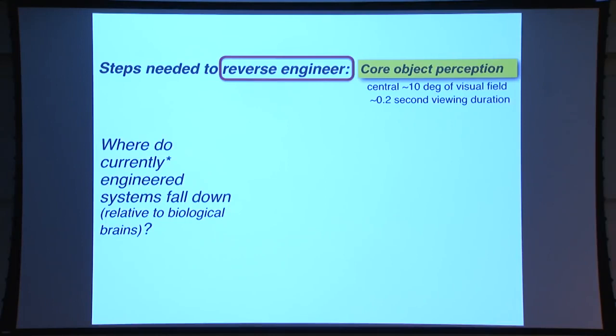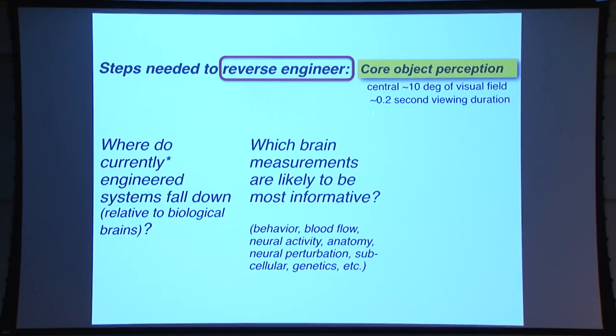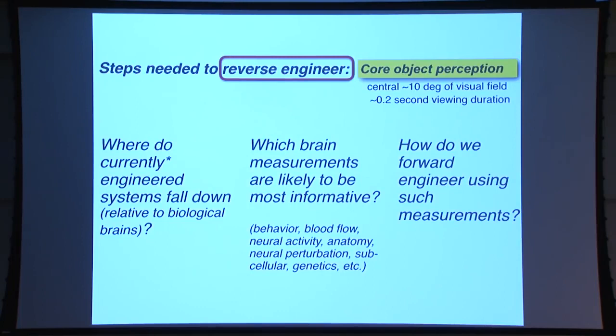When doing reverse engineering, you first want to look at where currently engineered systems fall short relative to biological brains. Then you ask: if I can measure parts of the brain — behavior, blood flow, genes, neural activity — what should I measure to inform how to build an engineering system to do better? Then you use those measurements to constrain forward engineering, building models constrained by that knowledge. I'll show how we followed this loop for core object perception as an example.